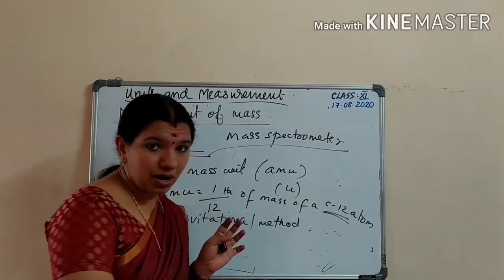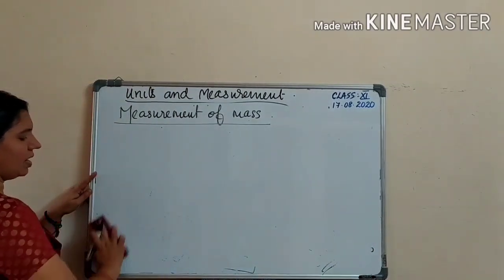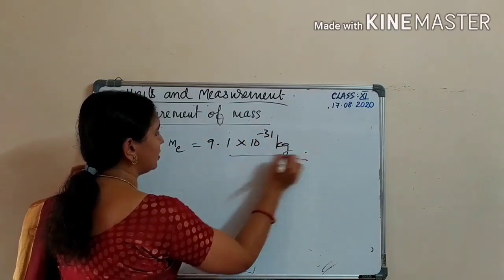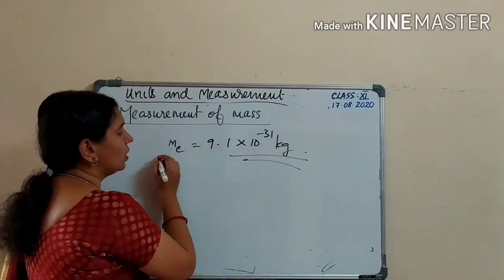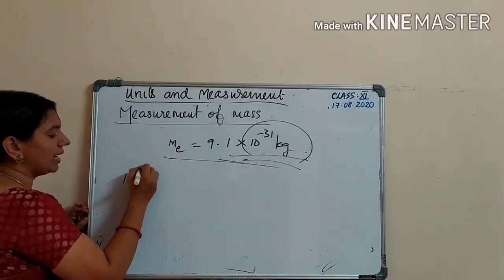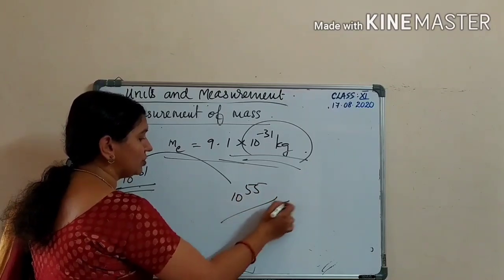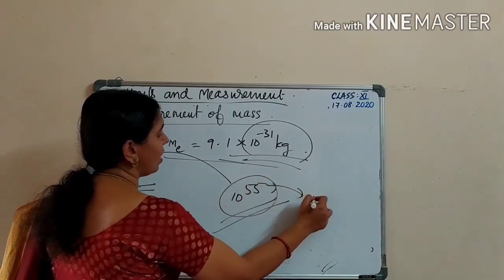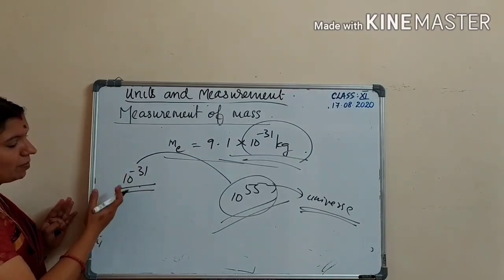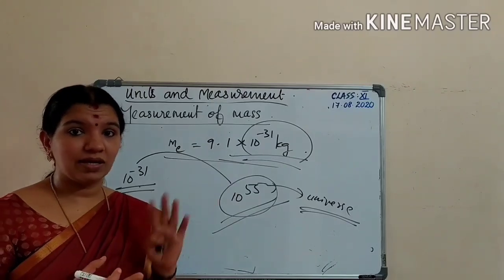For measuring smaller masses, we use a device called the mass spectrometer. For large or heavy masses, we use the gravitational method, which will be studied in the chapter on gravitation. The mass of an electron is 9.1 × 10⁻³¹ kg. The range of masses extends from 10⁻³¹ kg (electron) to 10⁵⁵ kg (approximately the mass of the universe), showing a very large variation.